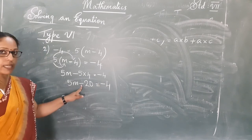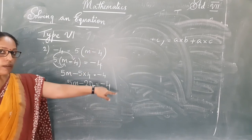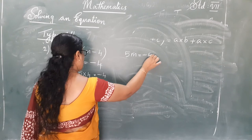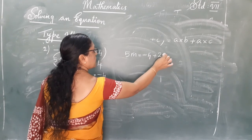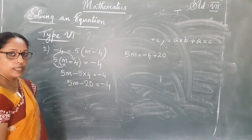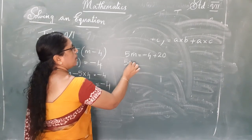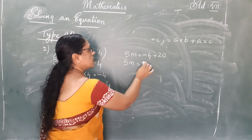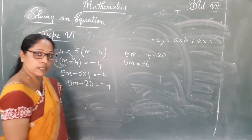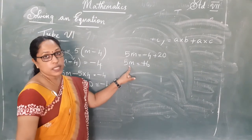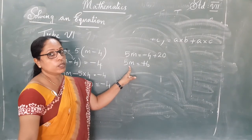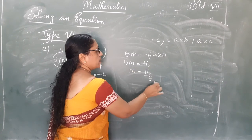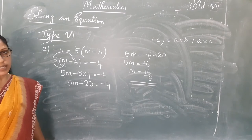The equation has subtraction, so shift the number to the right side: 5M equal to negative 4 plus 20. One is negative, one is positive — subtract and put the bigger number's sign, giving 5M equal to 16. The operation is multiplication, so to solve for M, divide: M equals 16 divided by 5. Since there is no whole number result, that is the answer.